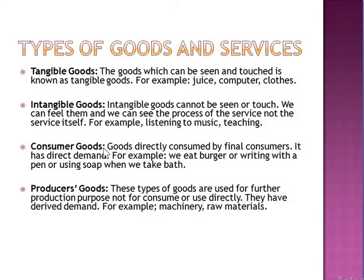Consumer goods are goods directly consumed by the final consumer. They have direct demand — meaning the product goes directly from the manufacturer to the final consumer. The product is wanted for consuming; we will eat it or use it ourselves, like a burger, or writing with a pen, or using soap.